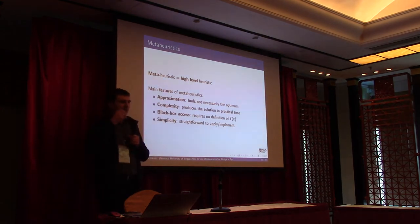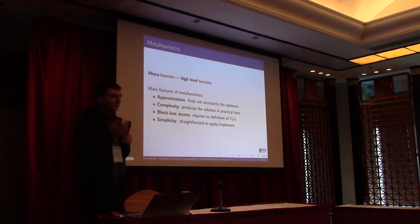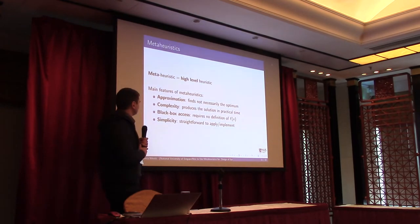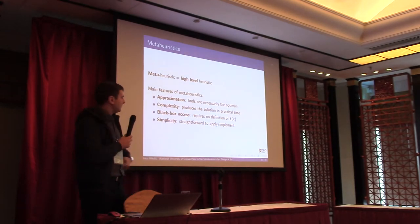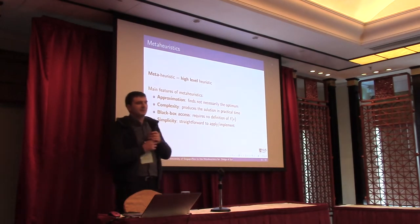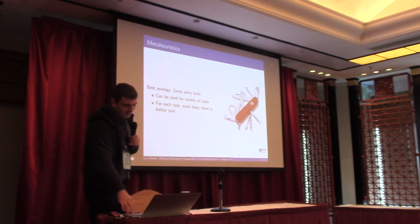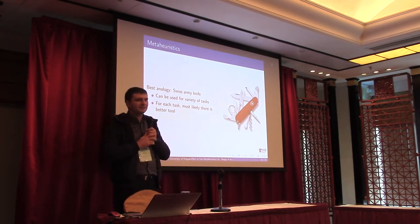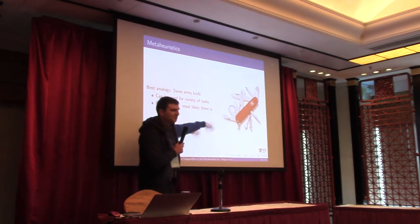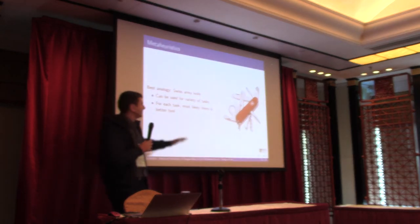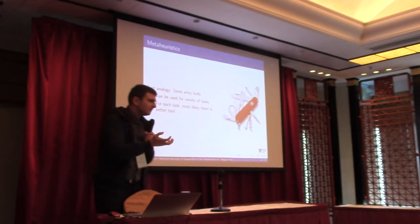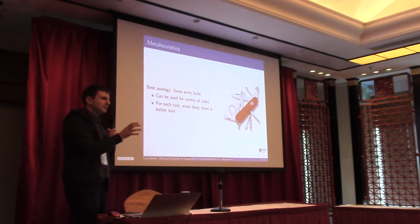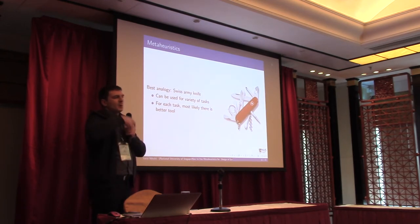One of the main features is approximation — you should understand that metaheuristics will not necessarily return the maximum. On the other hand, they are practical: when you decide to stop them, they provide some good solution. Like random search, they require only black-box access to the objective function and are very simple to implement. The best analogy is a Swiss Army knife — a universal tool applicable to many tasks, but not the best for any single task. Use metaheuristics when you have no better approach; otherwise, try to come up with your own algorithm.